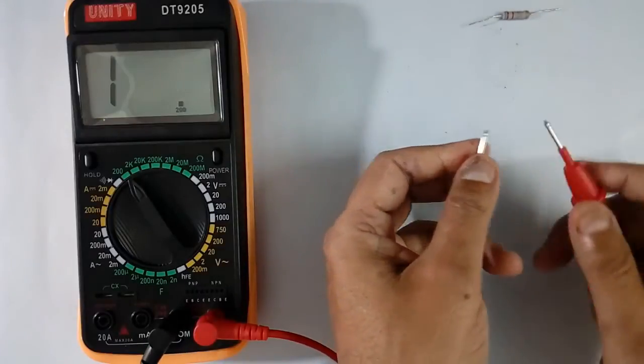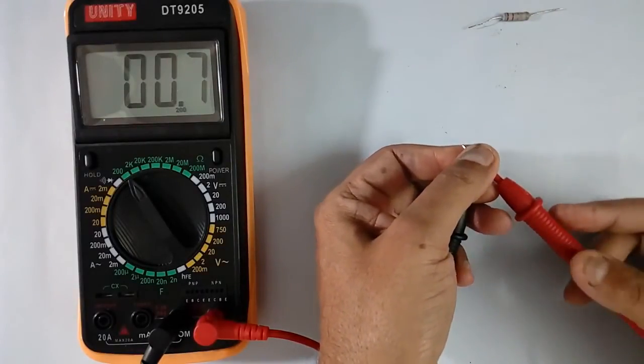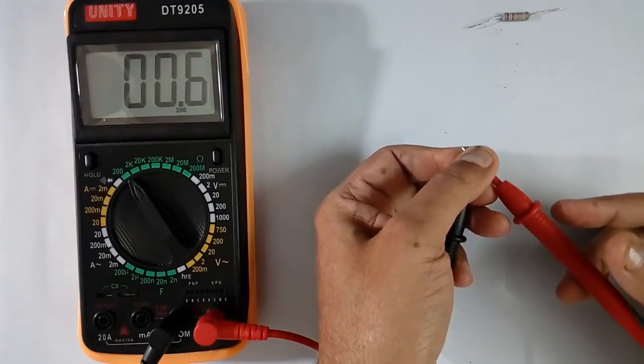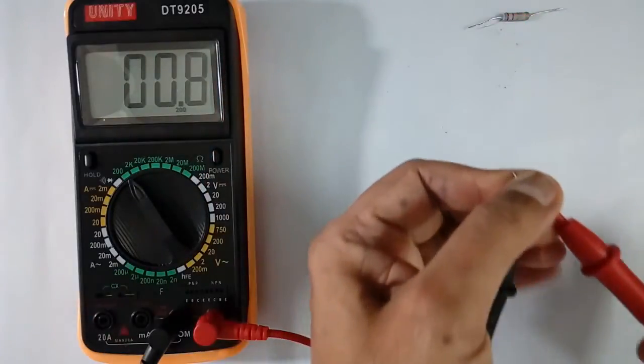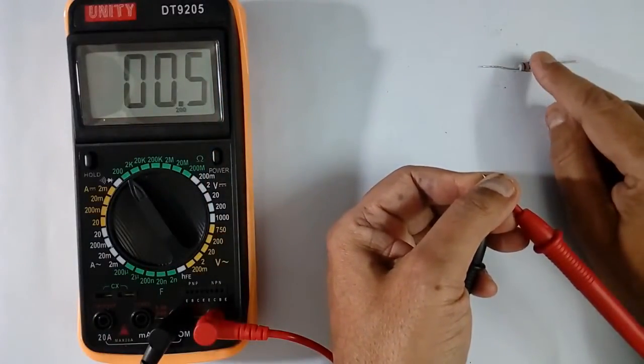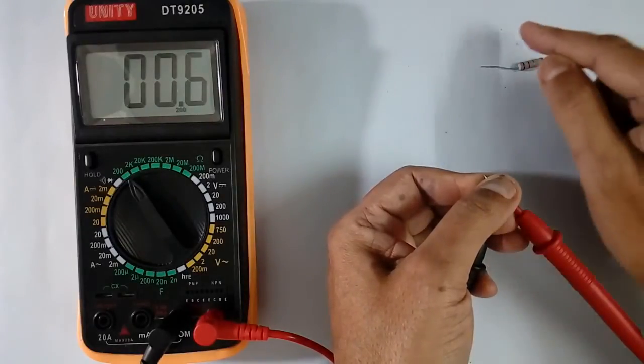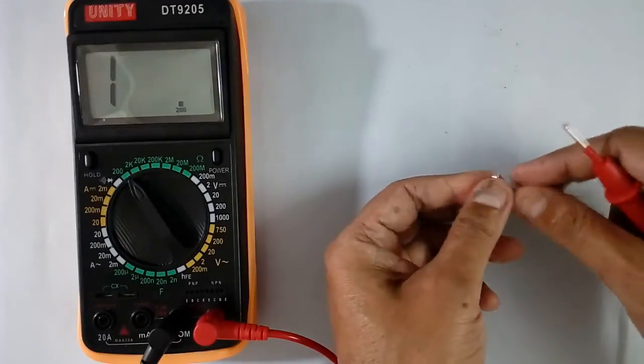Now if I remove the resistor and short this lead, it is showing 0.6 ohms. This 0.6 ohms is the resistance of this lead which is always added to resistor. When resistor value is small, this 0.6 ohms will add to 3 ohms. So error will be very high. So when resistor value is small.